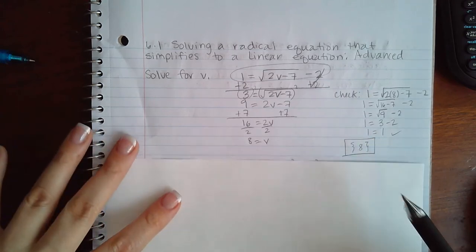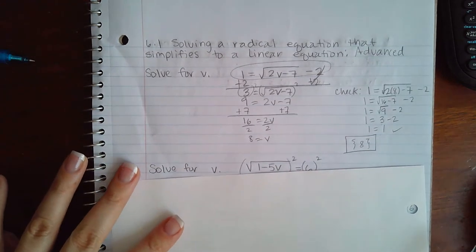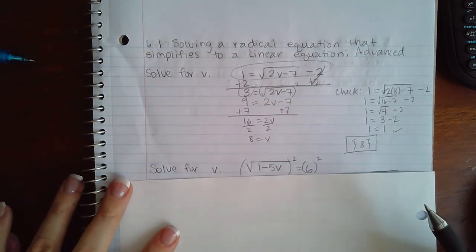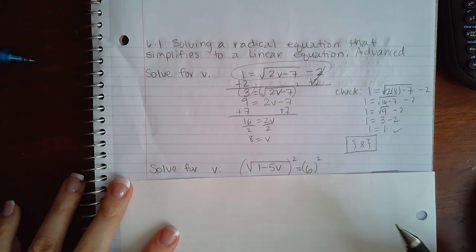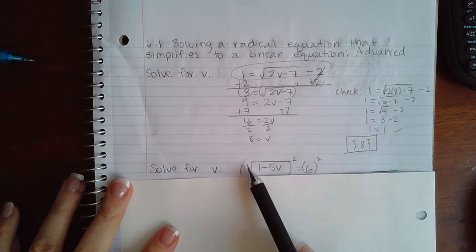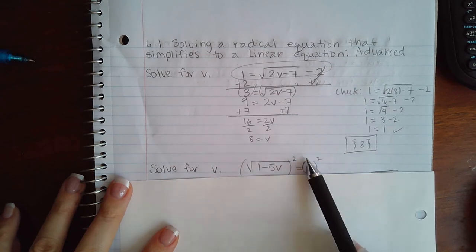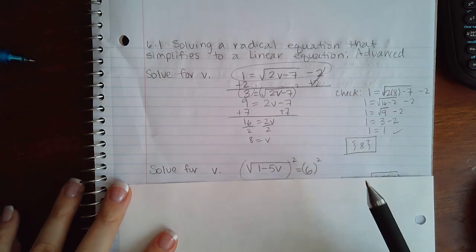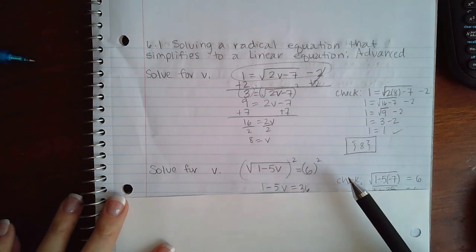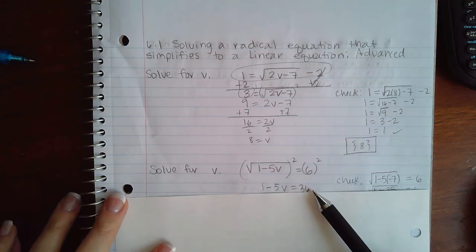Now for this example, I did not need to isolate the radical because the radical piece was already by itself. So immediately I took the index of the square root and applied the square power. When I did that, I got 1 minus 5v on the left-hand side, and on the right-hand side 6 squared is 36.